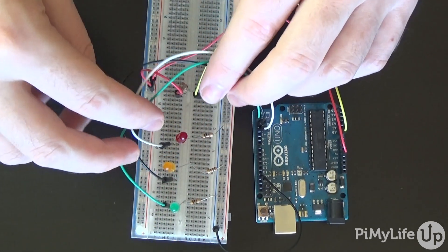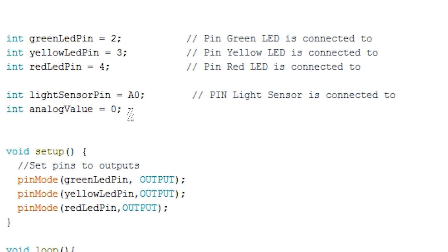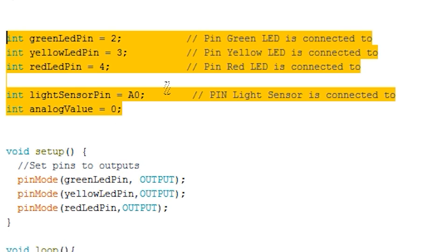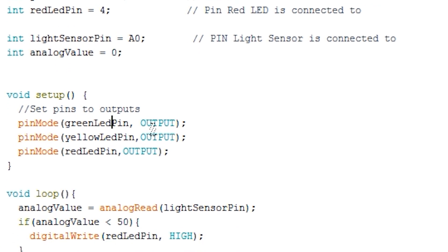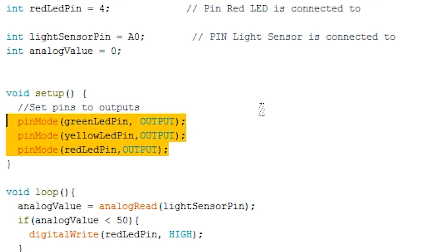Before we start anything, we first need to set up all our variables. For this program, we need four variables to store our pin numbers and one variable to store the value of the analog pin. These are all of type integer. Now set all the pins for the LEDs to act as outputs. You don't need to worry about setting up the analog pin.